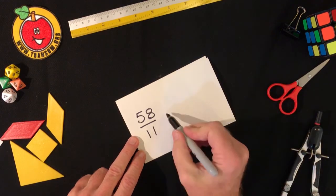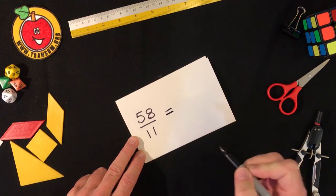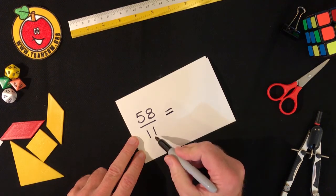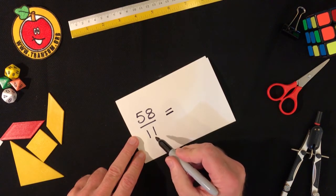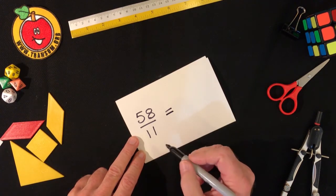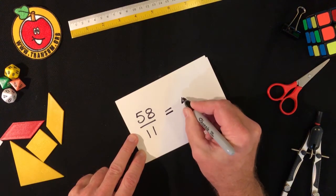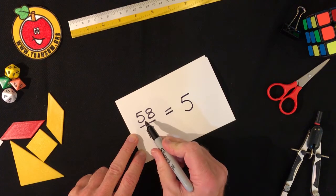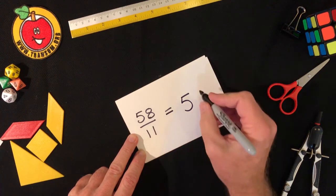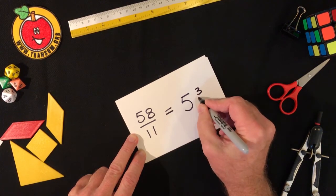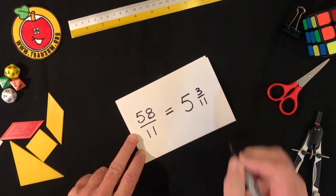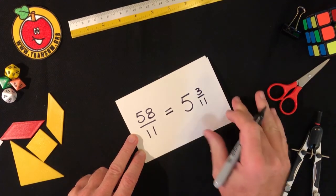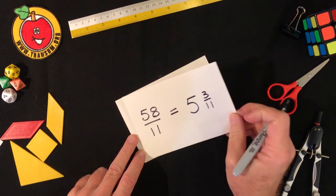Now this one's getting a bit more difficult, the numbers are getting a little larger but we know our eleven times table so we know how many elevens there are in fifty-eight. There are five whole ones because five elevens are fifty-five and that will just leave three left over. So the answer is five and three elevenths.